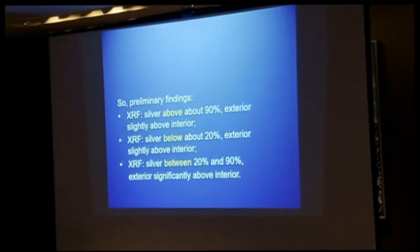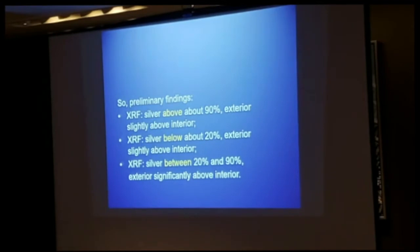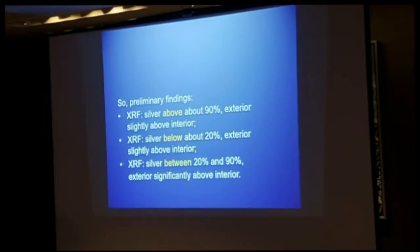Generally, of the 20 coins examined - recognizing this is a very small sample requiring many more for statistical certainty - when the silver on the exterior was above 90%, the exterior and interior were very close. The good silver coins came up the same whether looking at surface or interior. When you got below 20%, pretty well the same - they seemed fairly homogeneous with only a 5 to 10% difference. However, in that zone between 20% and 90% silver content, there's a huge difference between the surface silver and the interior silver.